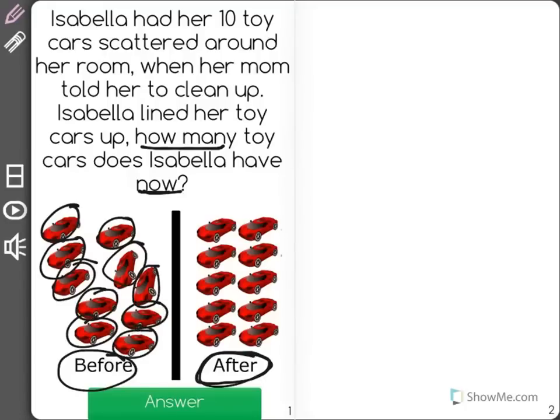And all she does is line them up. She's going to have the same number of toy cars that she started with, which is 10. She didn't lose any or find any new ones. All she did was put them in two nice clean lines for her mom.